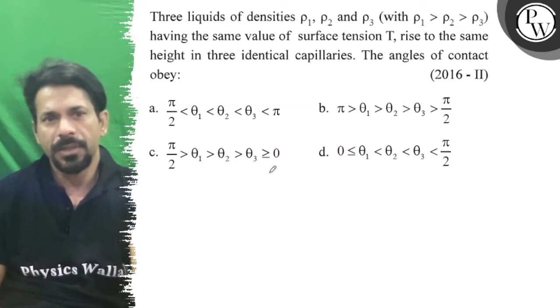Hello, let's see the question. Three liquids of densities ρ₁, ρ₂, and ρ₃, with ρ₁ > ρ₂ > ρ₃, having the same value of surface tension T, rise to the same height in three identical capillaries. θ is the angle of contact.